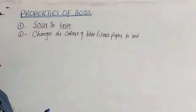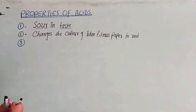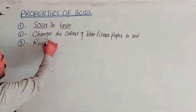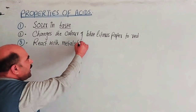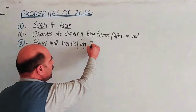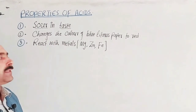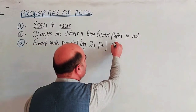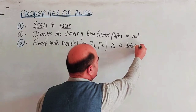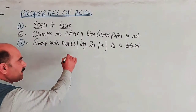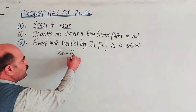The next property of acids is that they react with metals and release hydrogen gas. Metals like magnesium, zinc, and iron react with acids. For example, if you add zinc to sulfuric acid (H₂SO₄), the products are zinc sulfate (ZnSO₄) and hydrogen gas.